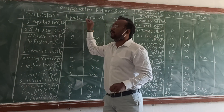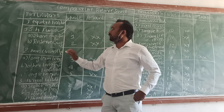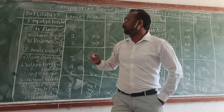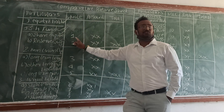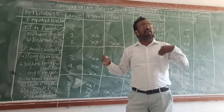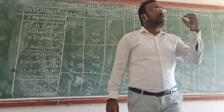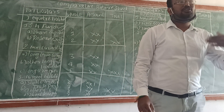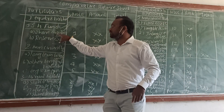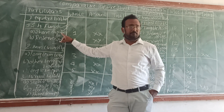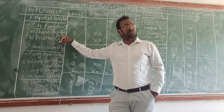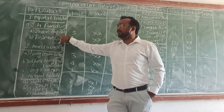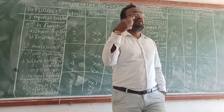Under shareholders fund, number 1 is share capital, and number 2 is reserve and surplus. In share capital, there are two types of capital given in the problem: one is equity share capital and another is preference share capital. Both of these are considered share capital.